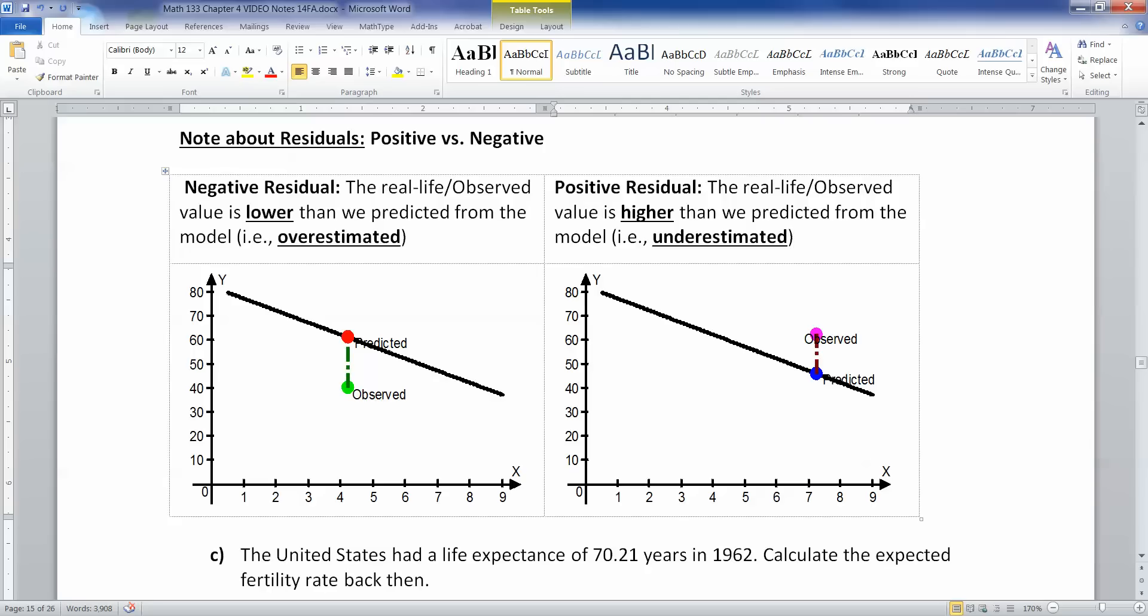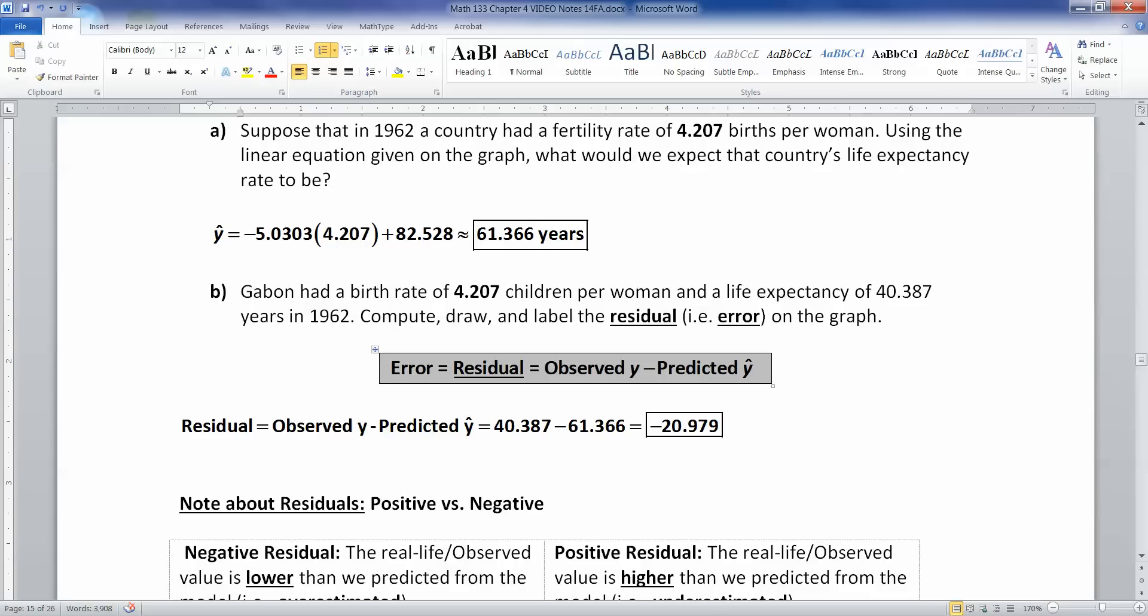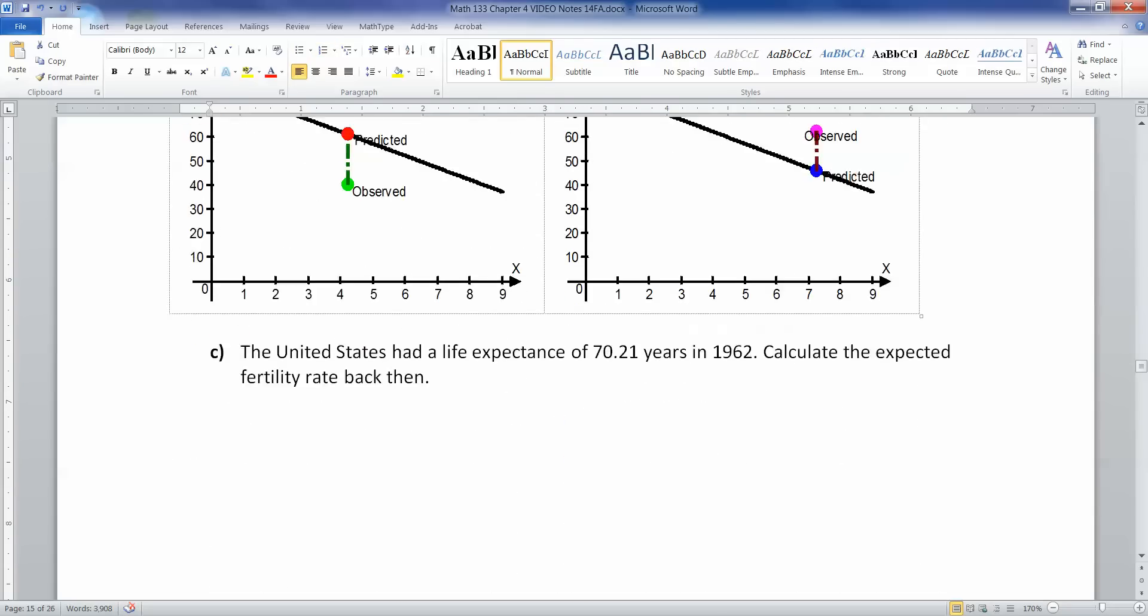All right. And then that distance in between, what you thought it would be and what it actually was, right? What you think it would be is on the line. That's your prediction. And then what it actually is, is down here at the dot or vice versa. What it actually is, is up here. And what you think it's going to be is down there. That distance in between, that vertical distance, that's your residual. That's this error that you're finding right here.